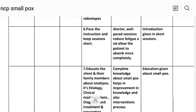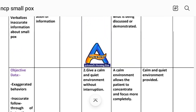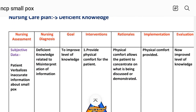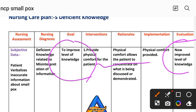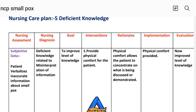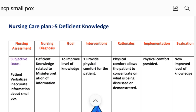After providing these interventions, we write the evaluation steps. Evaluation: improved level of knowledge. The goal to improve the level of knowledge has been achieved through the different interventions provided. This completes nursing care plan number five — deficient knowledge.